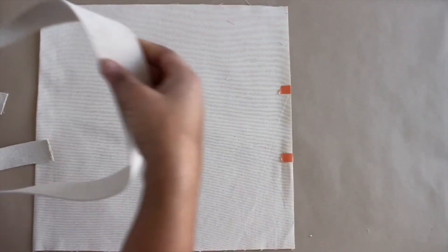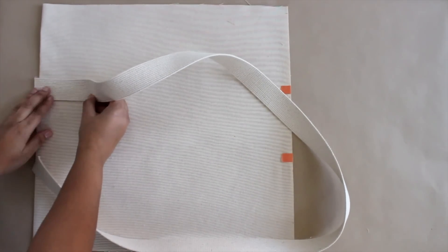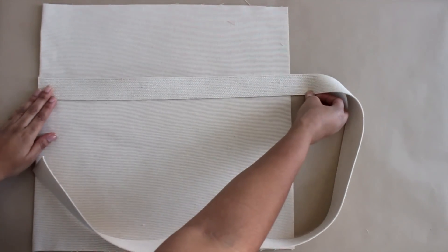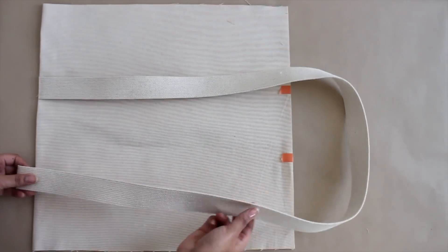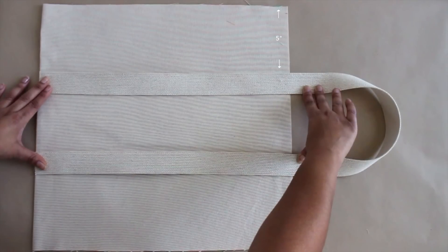And then this is where that extra step I was talking about comes in. So I am using a trim, and for the life of me I cannot think of what this is called right now, so I will put it in the description box. And this is what I am using as my strap. This you could actually just attach at the top of the bag if you wanted to.